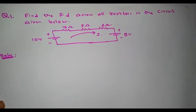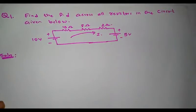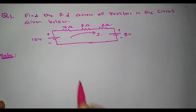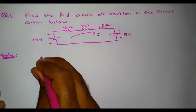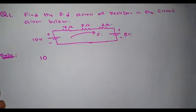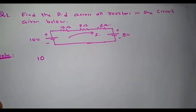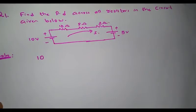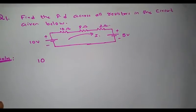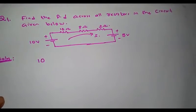Since I move from the negative terminal to the positive terminal, there is a rise in potential. We know that a rising potential should be assigned a positive sign. So I write the voltage as positive 10 volts. I am going to write the mesh equation corresponding to this closed mesh based on Kirchhoff's voltage law.